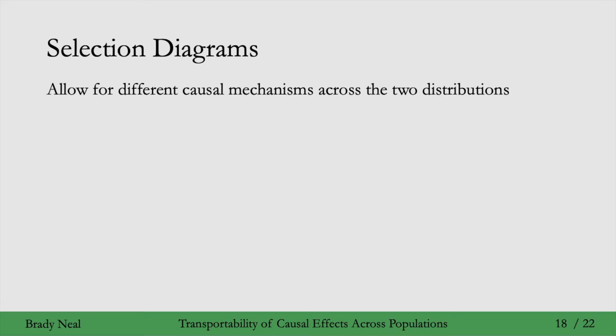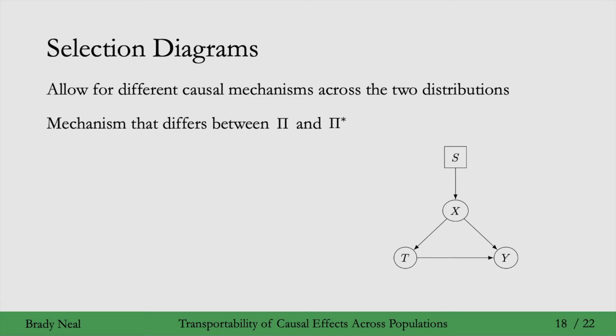A very important set of objects we need to introduce are selection diagrams. In the previous section on transfer learning, we assumed that the causal mechanisms were the same across the two distributions, p train and p test — analogous to p and p*. But in selection diagrams, we can allow for different causal mechanisms across the two distributions. Here's an example: we have a regular causal graph with nodes x, t, and y, plus a selection node s — drawn in a square to distinguish it from regular nodes. An arrow from s to x means the causal mechanism generating x can be different between the two populations π and π*.